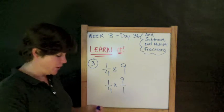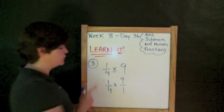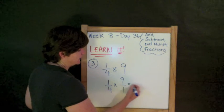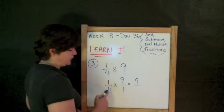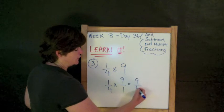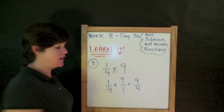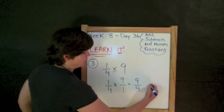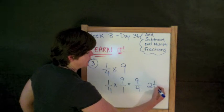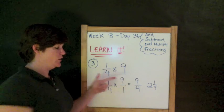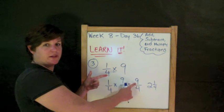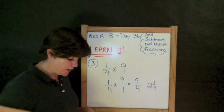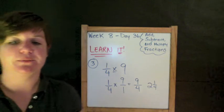Now, that was the hard part. The easy part is just to multiply across. 1 times 9 equals 9. 4 times 1 equals 4. So, we have 9/4 or 2 and ¼. Because I can get 1, 2 holes out of the 9 and have ¼ left over.